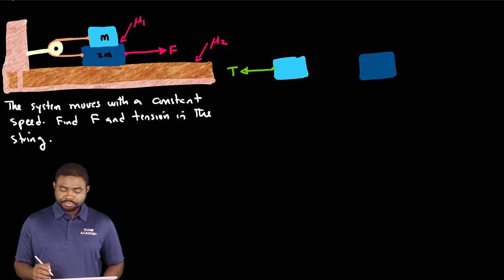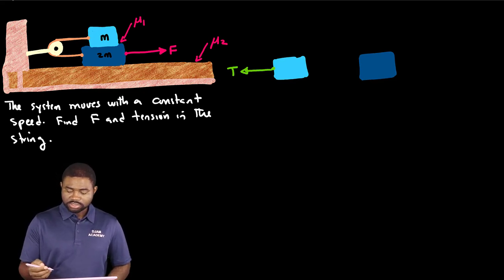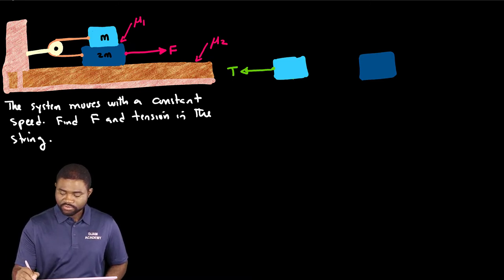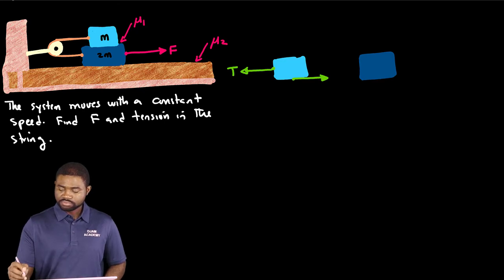Now block one slides on block two. That means that there is kinetic friction. This is Fk produced by one on two.